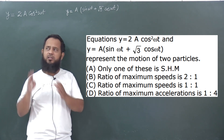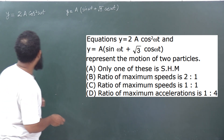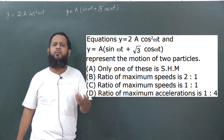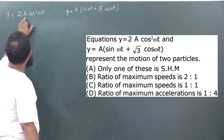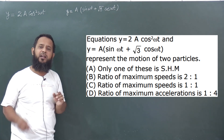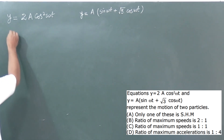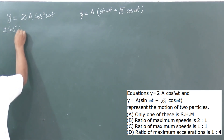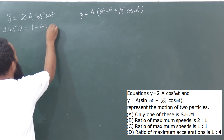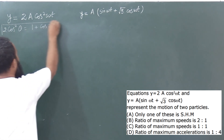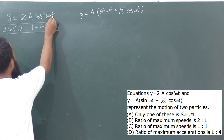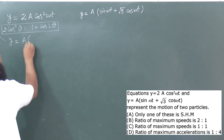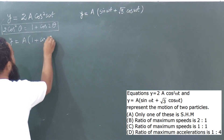जब instantaneous displacement दे रखे हों, तो हम trigonometric manipulation के ज़रिए इनको simplify करते हैं। सबसे पहला है 2a cos²(ωt) — यहाँ square terms आ रही हैं। Square terms हटाने के लिए formula है: 2cos²θ = 1 + cos2θ। So y = 2a cos²(ωt) can be written as y = a(1 + cos 2ωt).